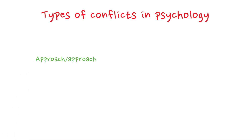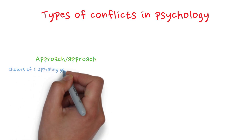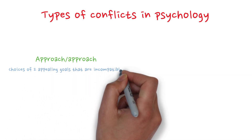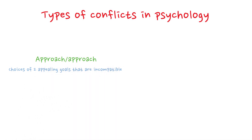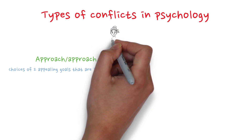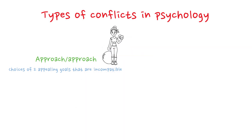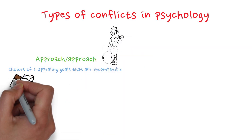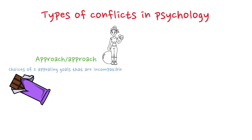First we have the approach-approach conflict. This conflict involves choices of two appealing goals that are incompatible. For example, the new year has begun. Some of you might have a resolution to have that summer body, but you might also like the idea of eating chocolate every day. So this could be an approach-approach conflict — both are very desirable choices but don't necessarily work together.